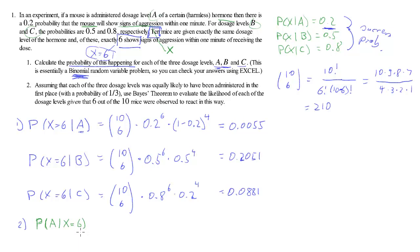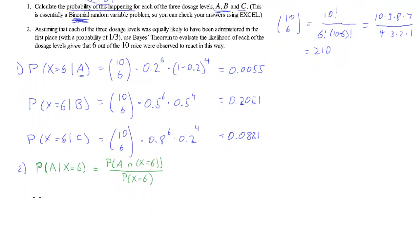We use Bayes' theorem to figure out that this is the same as the joint probability of A and X equals 6, divided by the marginal probability of X equals 6. We want this for all three dosages: the probability of A given X equals 6, the probability of B given X equals 6 — which is the joint probability of B and X equals 6 divided by P(X equals 6) — and similarly for C.